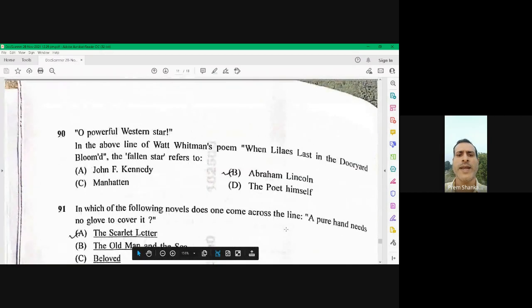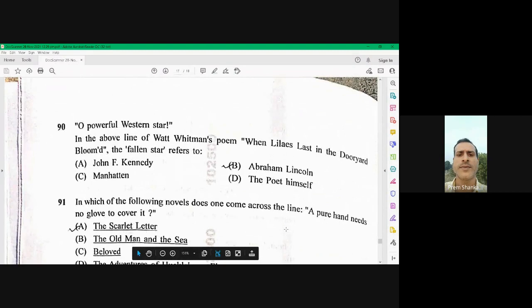Question number 90. O powerful western star. In the above line of Walt Whitman poem, when Lillac's last in Abdul Brumyard bloom, the fallen star refers to Abraham Lincoln. B is the right option.